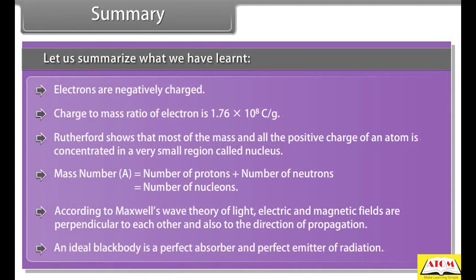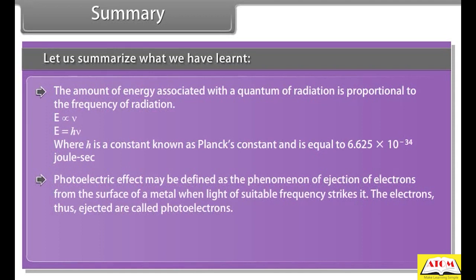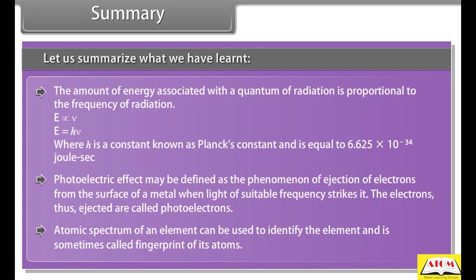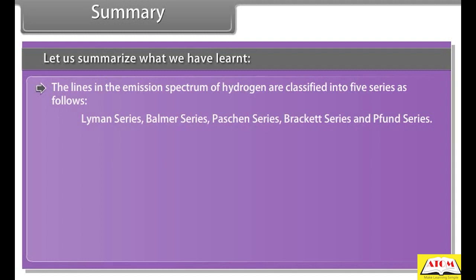An ideal black body is a perfect absorber and perfect emitter of radiation. The energy associated with a quantum of radiation is proportional to its frequency, where Planck's constant h = 6.625 × 10⁻³⁴ joule second. Photoelectric effect is the ejection of electrons from the surface of a metal when light of suitable frequency strikes it; the ejected electrons are called photoelectrons. Atomic spectrum of an element can be used to identify the element and is sometimes called the fingerprint of its atoms.